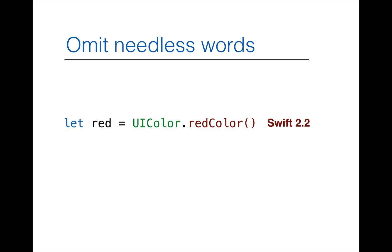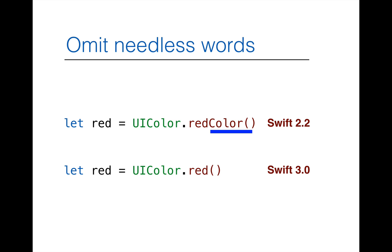Another new thing with Swift 3.0 is that you can omit any needless words. With Swift 2.2, the method `redColor` was called on the class `UIColor`. With Swift 3.0, we omit words that are not necessary — like `color` — because it's obvious that `red` in this context refers to a color. Whenever you use the convert tool to migrate your code from Swift 2.2 to 3.0, all needless words will be stripped.